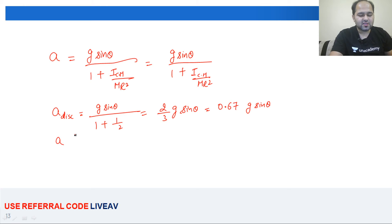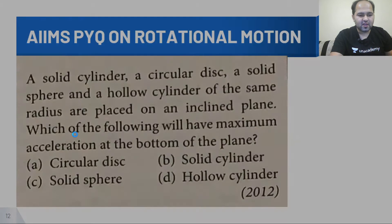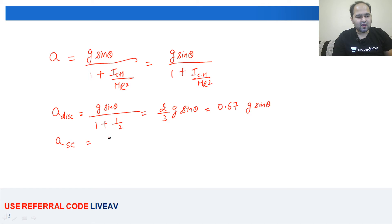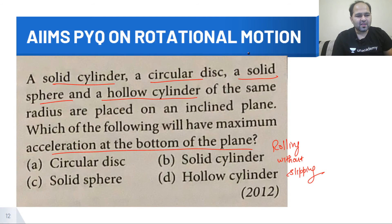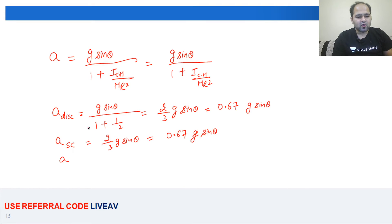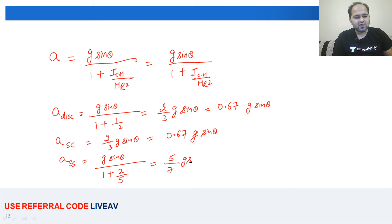Solid cylinder का moment of inertia disc के same होता है — MR²/2 — तो वह भी 0.67 g sinθ आएगा. Solid sphere का moment of inertia होता है 2/5 MR², तो यह आएगा g sinθ / (1 + 2/5) = 5/7 g sinθ, which is 0.71 g sinθ.